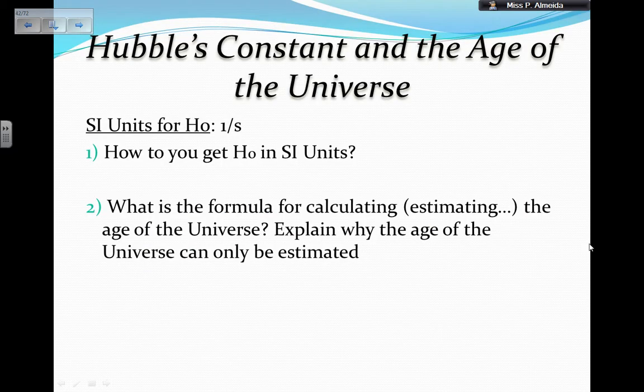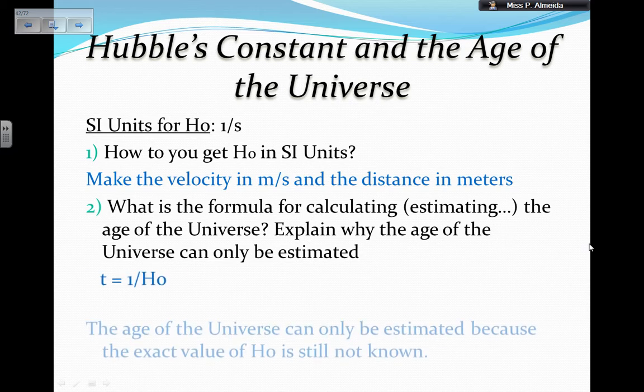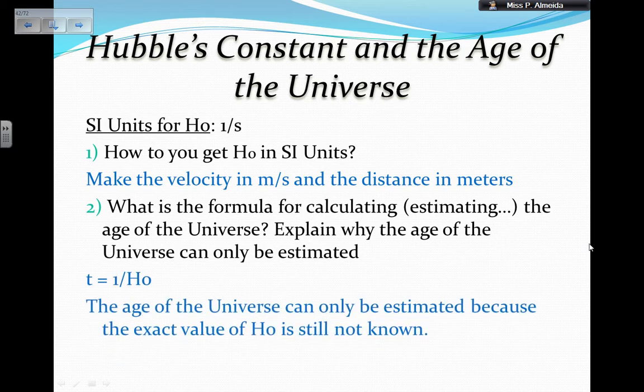This means that the units for the Hubble constant is one over second. The way you get the units for the Hubble constant is to make the velocity in meters per second and the distance in meters. This makes the meters from the velocity cancel out with the distance in meters, and you get 1/s as the units for the Hubble constant. This means that if I simply do 1 divided by 1 over s, so 1 over H₀, that is going to be my formula to calculate or estimate the age of the universe. The age can only be estimated because we still don't know the exact value of the Hubble constant.